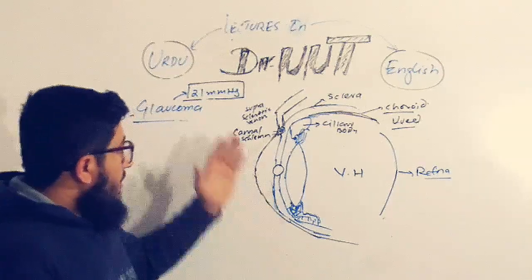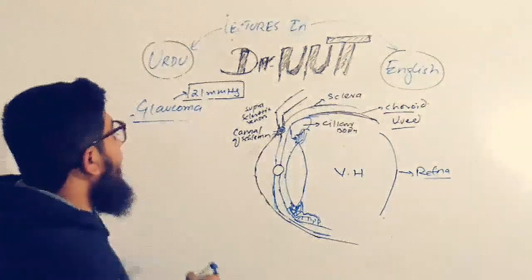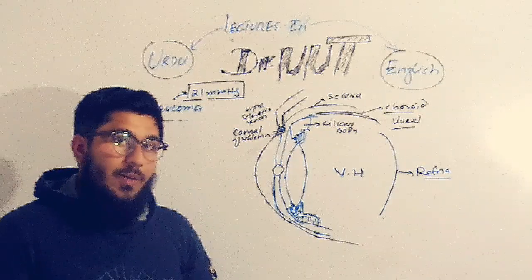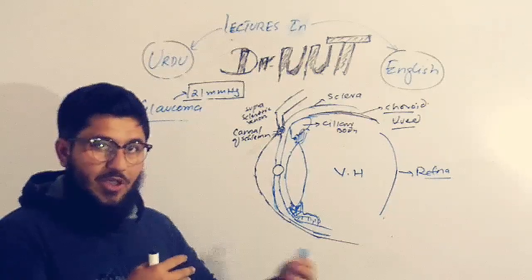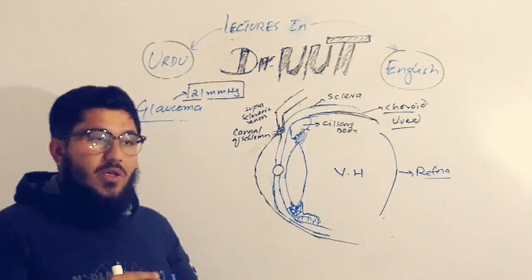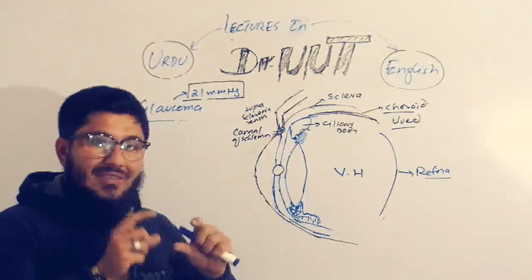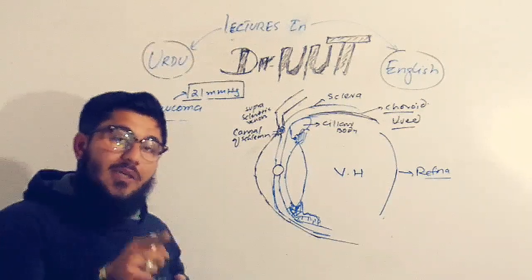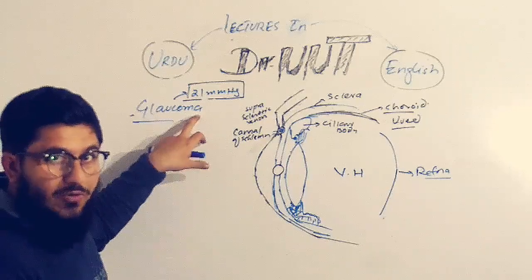Welcome to the topic of glaucoma. Let's proceed with the lecture in English. Glaucoma is a disease of the eye — a progressive disease, meaning over time it aggravates or worsens. The result of this disease is that a person becomes blind.